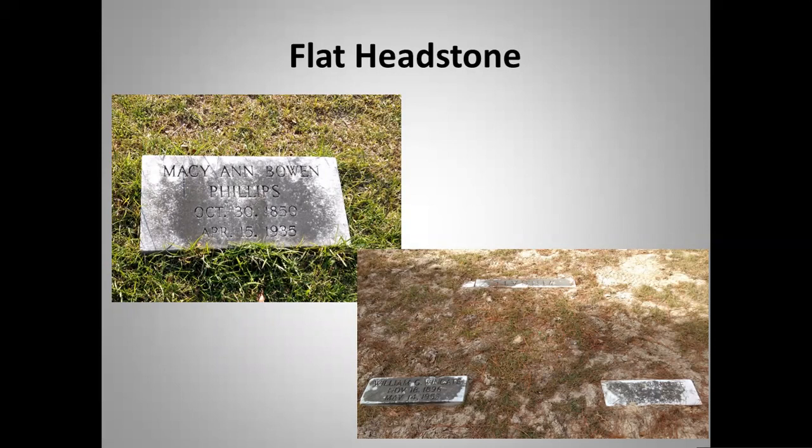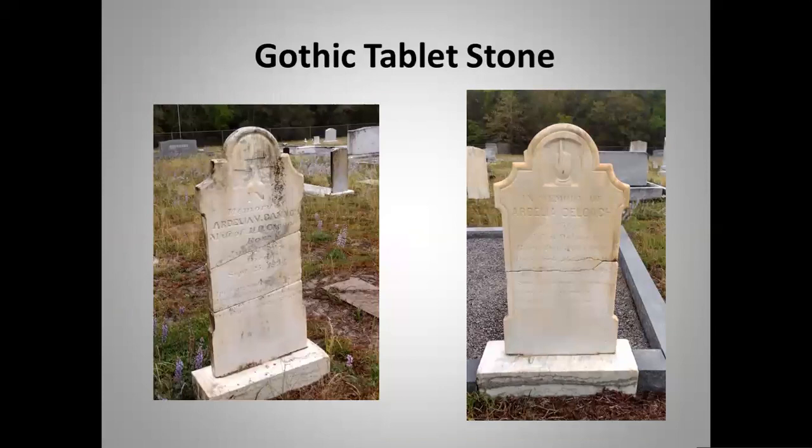Flat headstones are made of stone but are flat to the ground and level. Some cemeteries will only allow flat headstones for maintenance purposes like lawn mowers. A Gothic tablet stone is much more ornate at the top, usually with three to five different shapes. A trefoil headstone — as the name suggests — has three different round parts at the top.